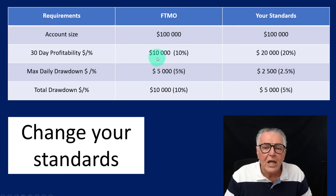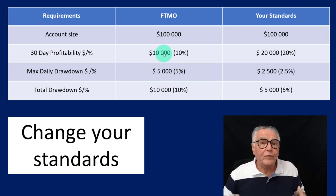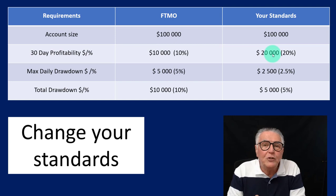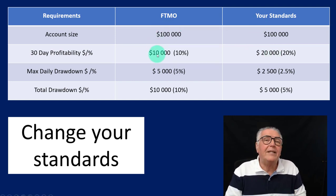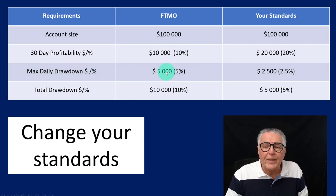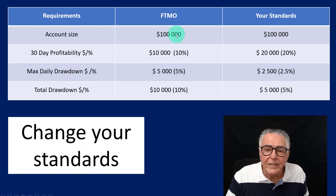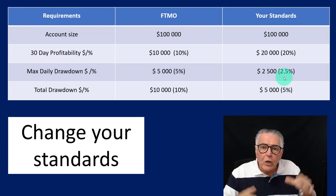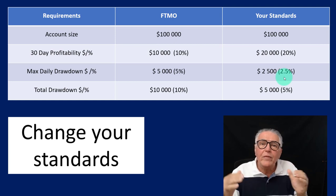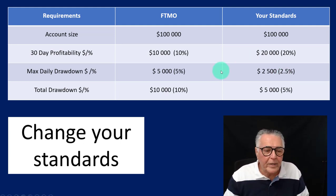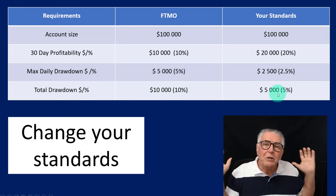For the FTMO $100,000 account, the required profit is $10,000. I'm saying you need to aim for $20,000 — because if you miss $20,000 you're still more likely to meet their requirements. If you're only aiming for $10,000 and miss, your money is gone. Similarly, their maximum daily drawdown is $5,000 — I say reduce your personal standard to $2,500, making it stricter so you have a safety buffer.